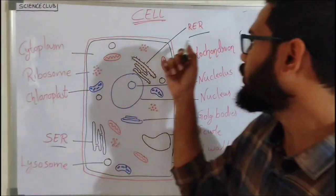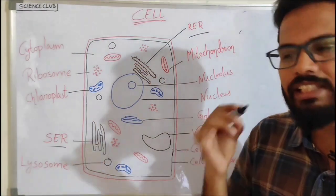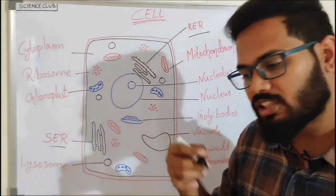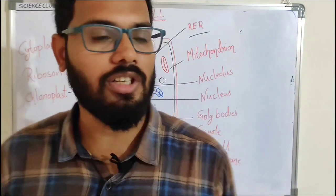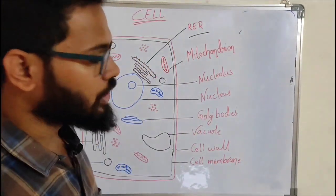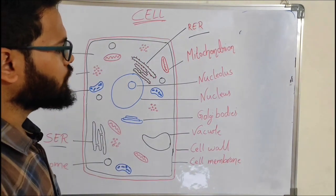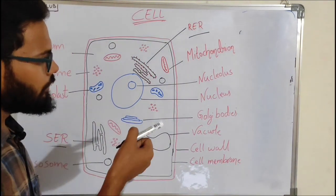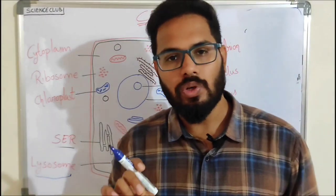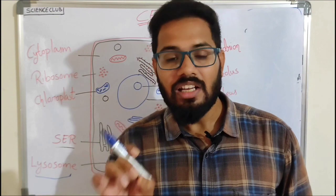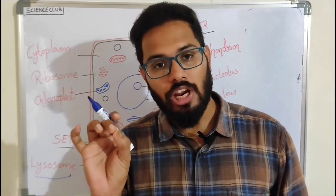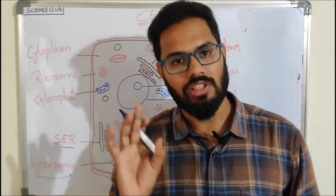Rough endoplasmic reticulum helps in protein synthesis and smooth endoplasmic reticulum helps in the synthesis of lipids. Vacuoles are used for storage. Golgi bodies are used for transportation. Lysosomes contain digestive enzymes which degrade defective intracellular organelles and also help in the processes of endocytosis and phagocytosis.